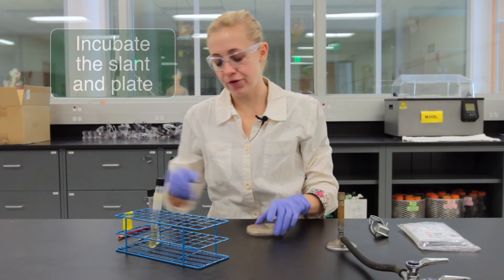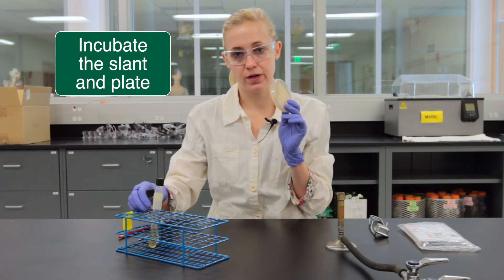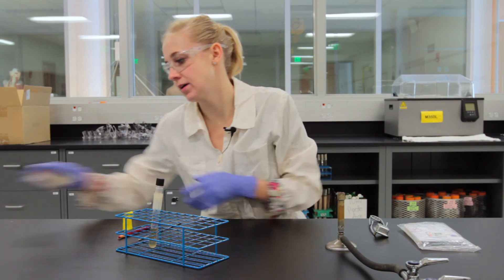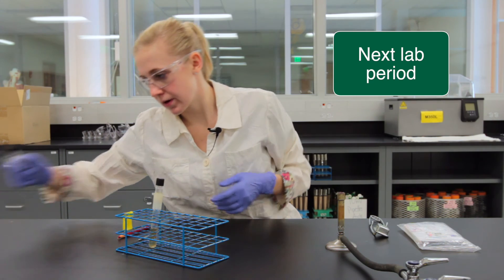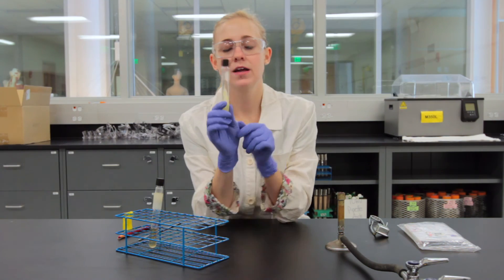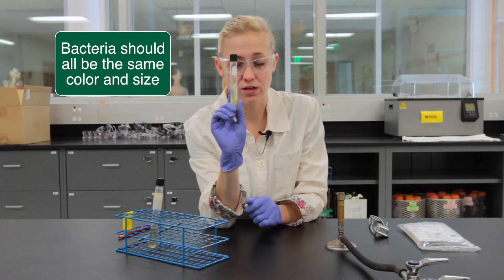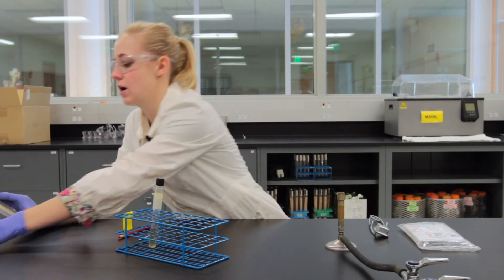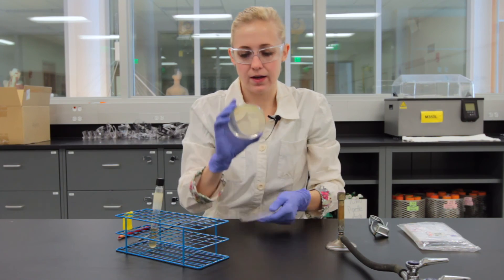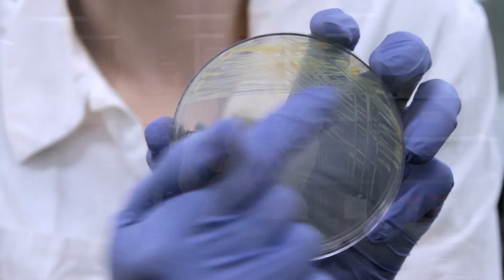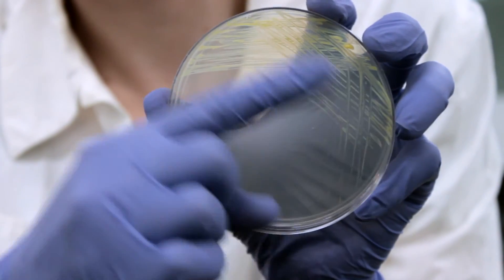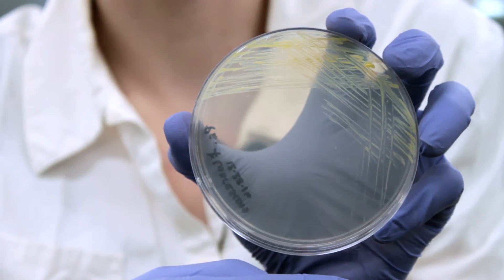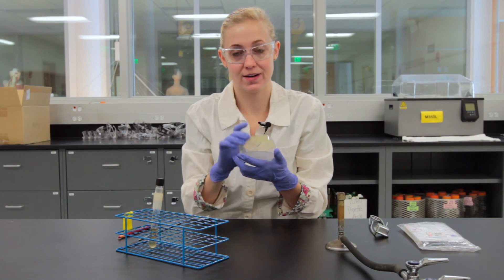And then after I incubate both my nutrient agar plate upside down or inverted as well as my nutrient agar slant in the incubator what you'll see in about a week or a couple of days on the nutrient agar slant you should just see one purified colony so to speak and then on the nutrient agar plate what you'll see is that you've got lots of bacteria in section one but as you move to section two and into section three you'll start to see isolated individual colonies indicating that you've correctly aseptically transferred your bacteria.